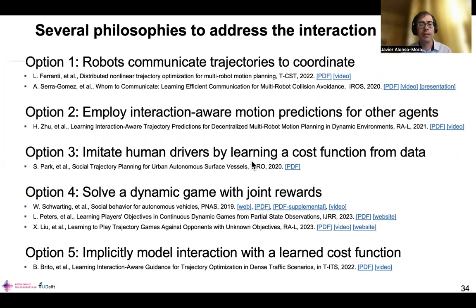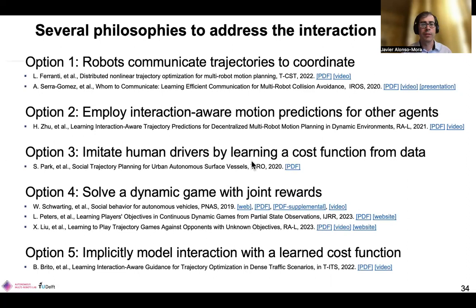There are many different approaches to address this interaction problem. I've listed five. The first is having all vehicles communicate their trajectories to coordinate, for example with distributed MPC. The second uses motion predictions for other agents that implicitly encode interaction, learned with reinforcement learning from simulation data. The third uses imitation of what a human driver would have done. The fourth explicitly models and solves the joint optimization as a complex dynamic game with joint rewards for all agents. The fifth — which I will describe in more detail — is to learn a cost function that implicitly models interaction with other traffic participants.